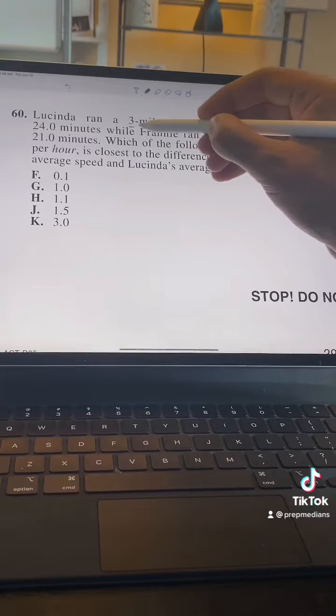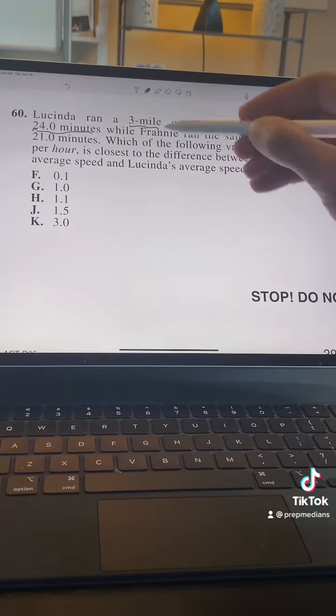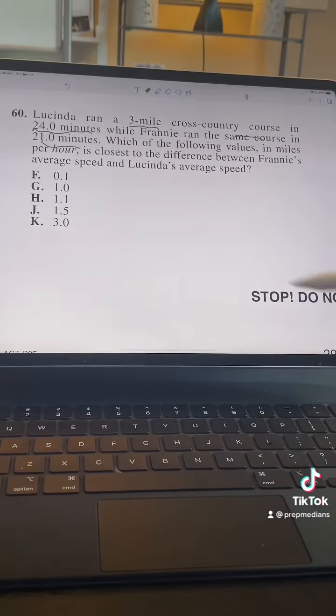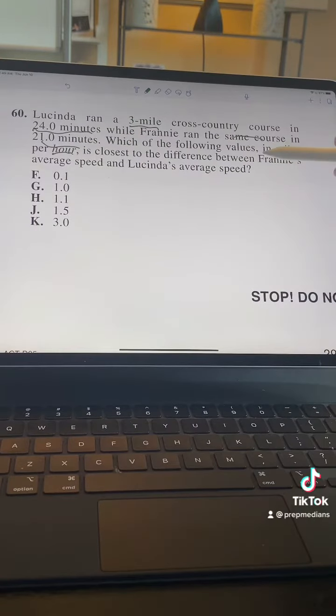So Lucinda ran a three-mile cross-country course in 24 minutes, while Franny ran the same course in 21 minutes. Well, Franny, you may be an 87-year-old woman, but you are fast. Which of the following values in miles per hour is closest to the difference between Franny and Lucinda's average speeds?